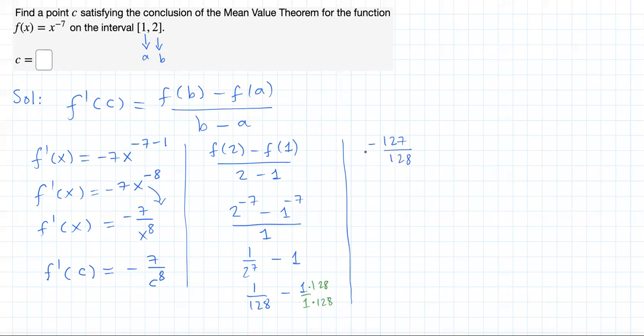So this guy has to equal this guy. Derivative equal to the average value of the function. The negative sign will cancel. Let's cross-multiply to quickly solve this.